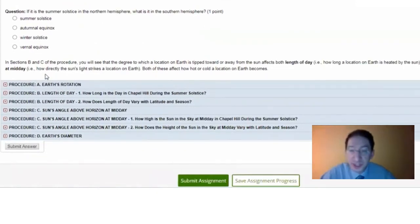So in the procedure sections, you'll see that the tilt of Earth's rotation axis has two effects. The first is length of day, or in other words, how long a location on Earth is heated by the sun. The second is how high the sun appears in the sky, say at midday, or in other words, how directly the sun's light strikes a given location on Earth. Both of these determine how hot or how cold a location becomes. Okay, that's it for this video.